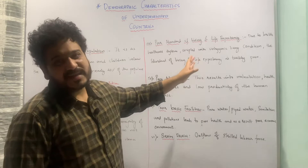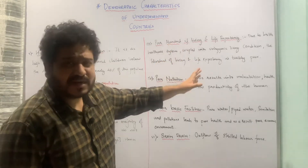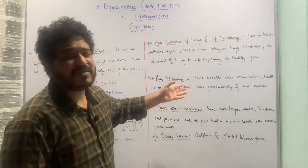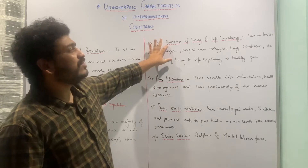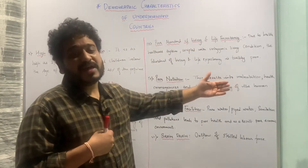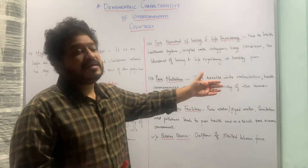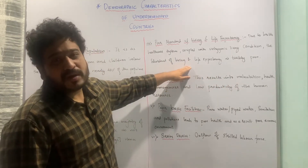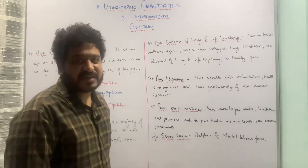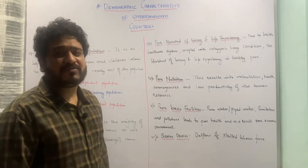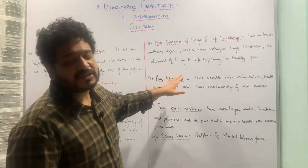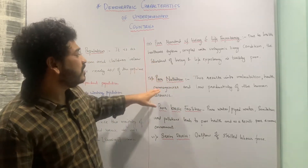Let us now move to poor standard of living and life expectancy. Since we have a very brittle healthcare system coupled with unhygienic living conditions in most developing economies, the standard of living deteriorates. As a result, life expectancy — the age till which one will be able to live properly — is poor in most developing economies. This poor standard of living and life expectancy is again a demographic characteristic, particularly across South Asia.